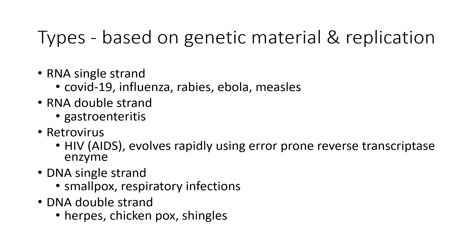Then there are RNA double-stranded viruses. HIV, which causes AIDS, is an example of a retrovirus. They use a different type of enzyme system for copying RNA into DNA, using an enzyme called reverse transcriptase, which is extremely error-prone. It makes lots of errors when it builds the DNA, and that's one reason why HIV evolves so rapidly. The other RNA viruses use a different enzyme to build more virus RNA when they enter a cell. There are also DNA single-strand and double-strand viruses as well.